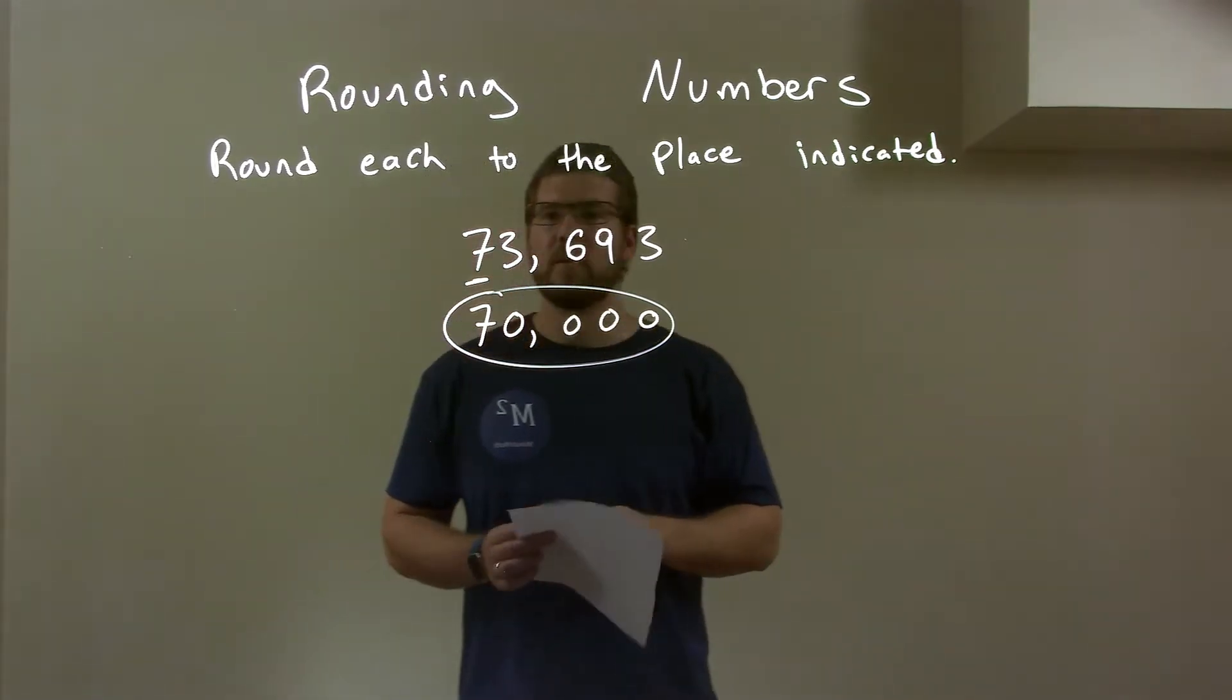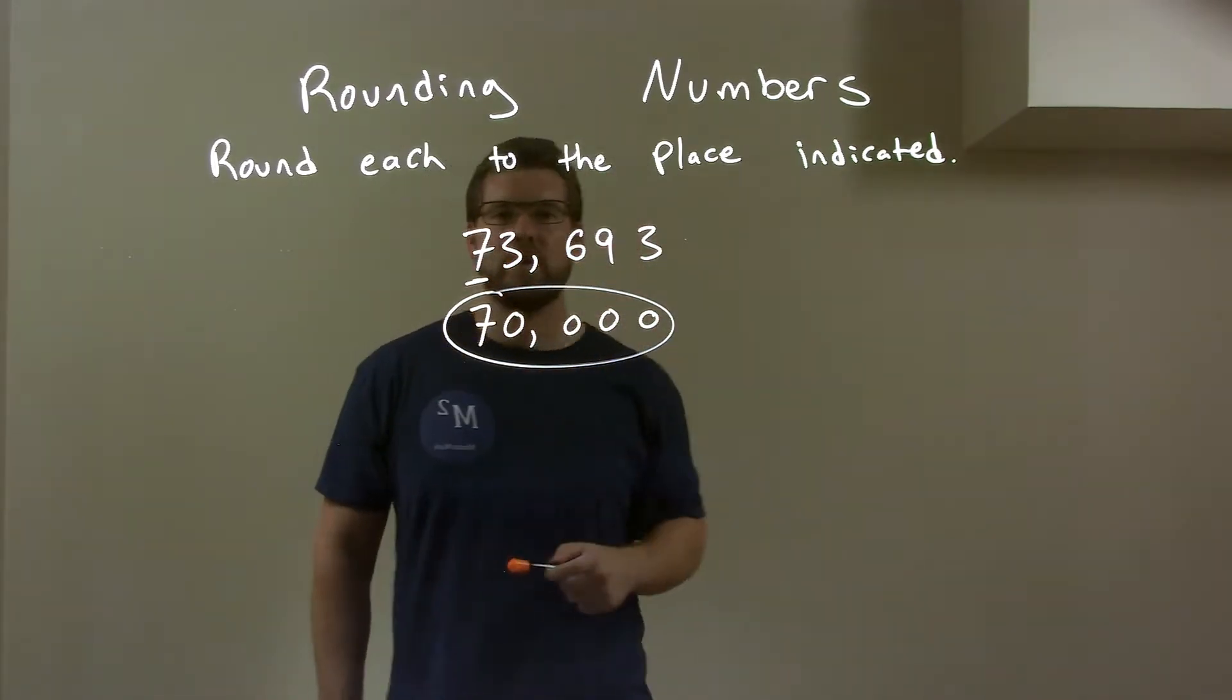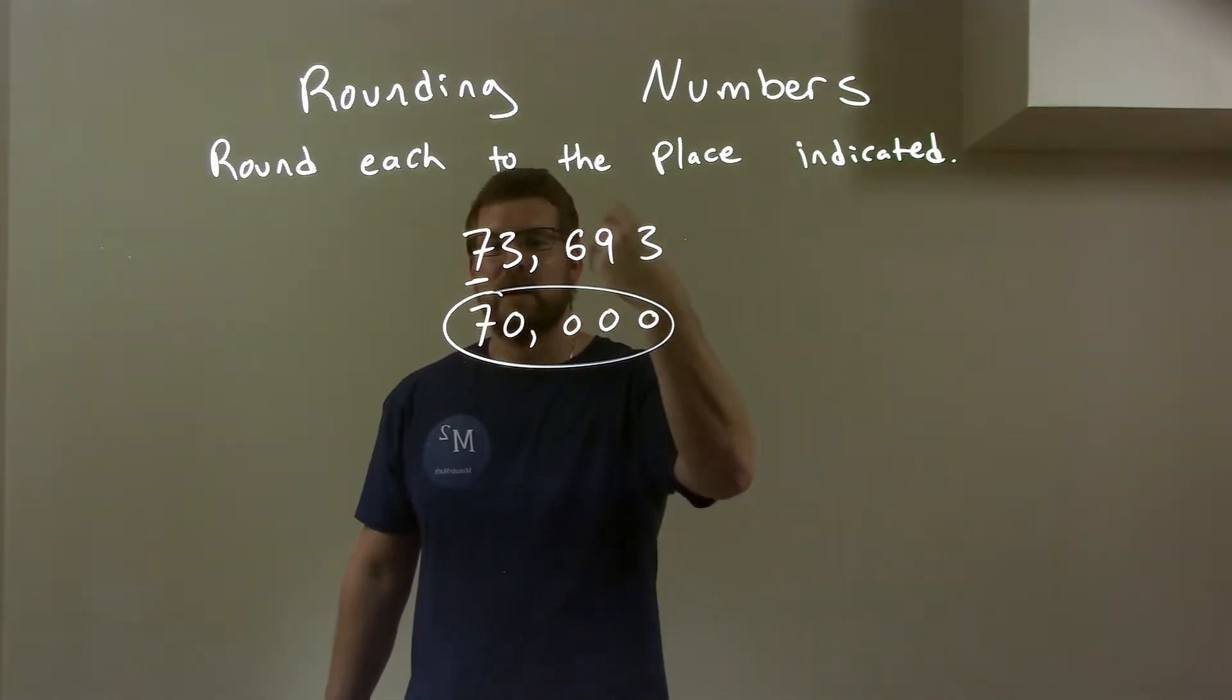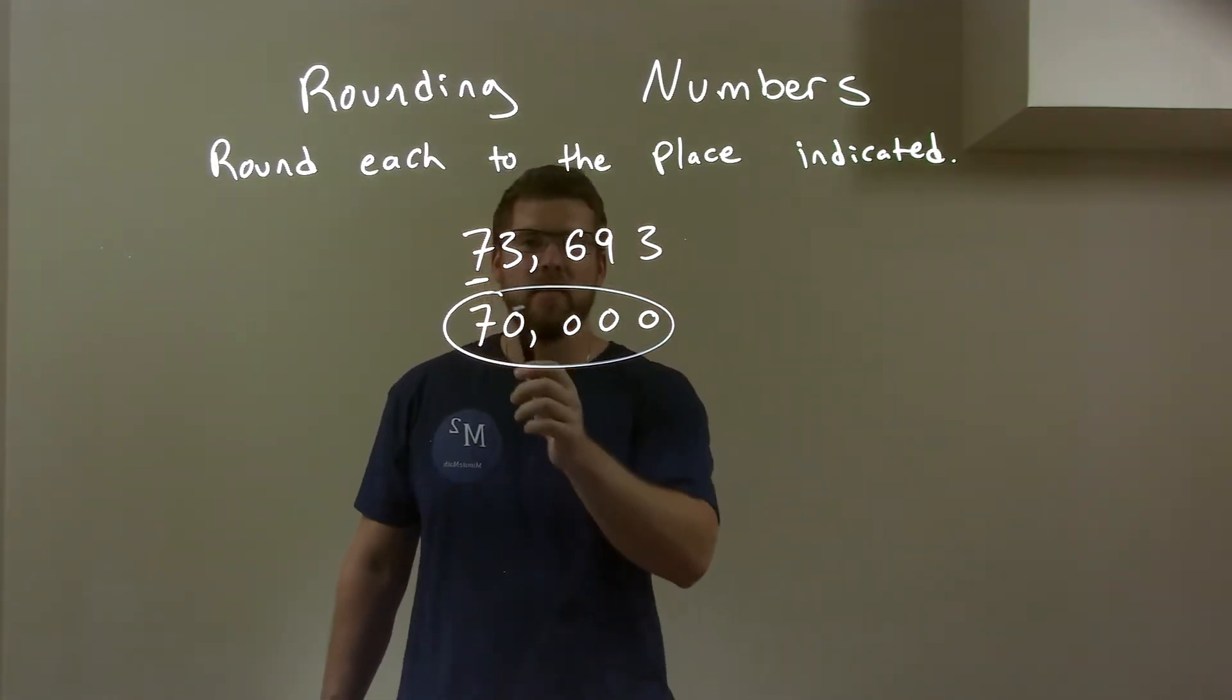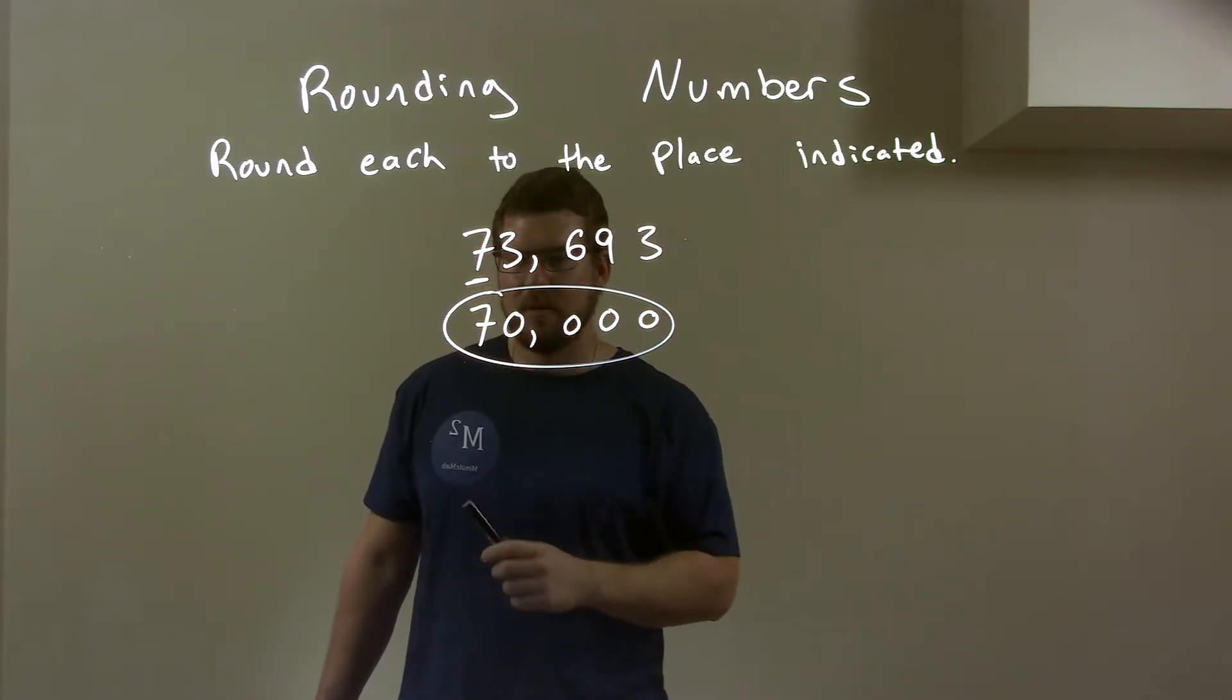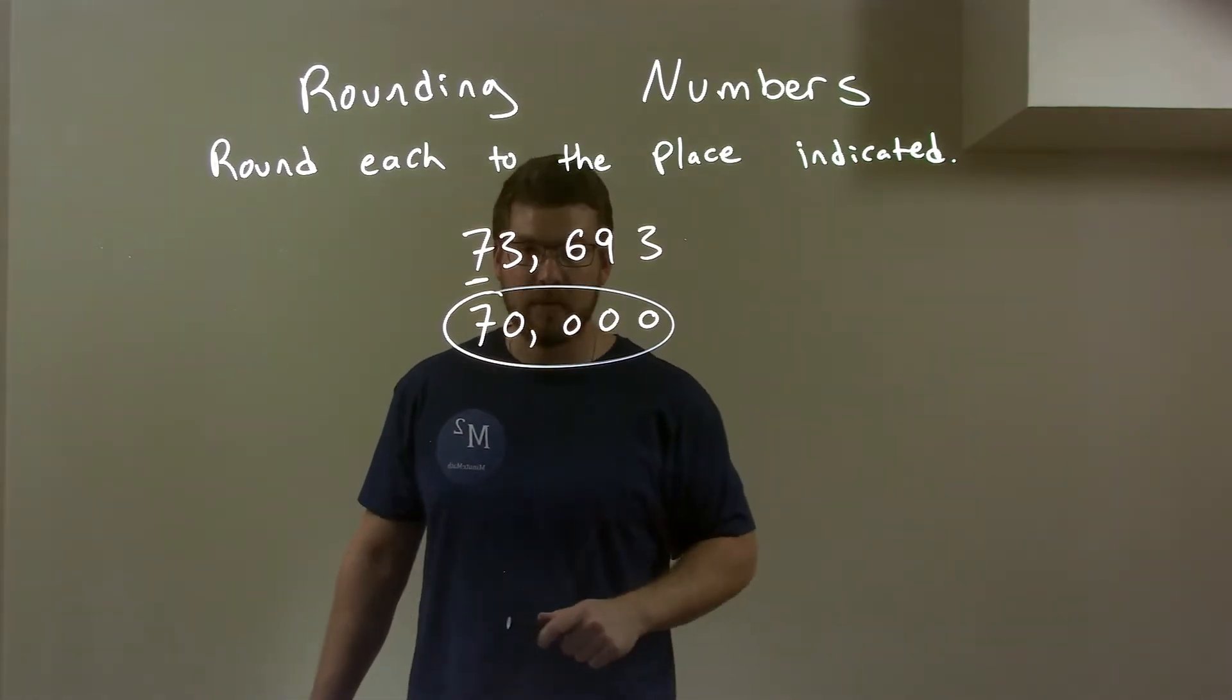So quick recap, we're given 73,693 and we have to round at this 7. Well, the 3 causes 7 to round down, so we keep it a 7. The rest comes downwards, so 0, 0, 0, 0 afterwards and we have our final answer of just 70,000.